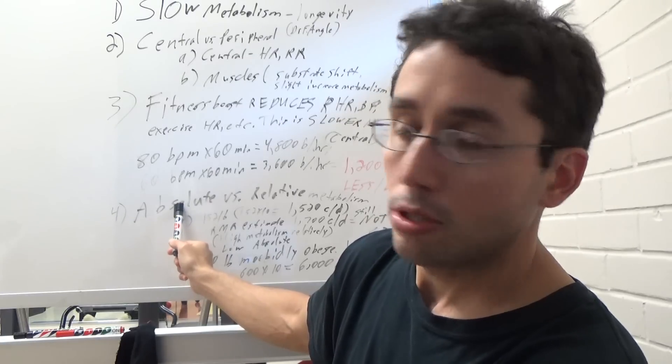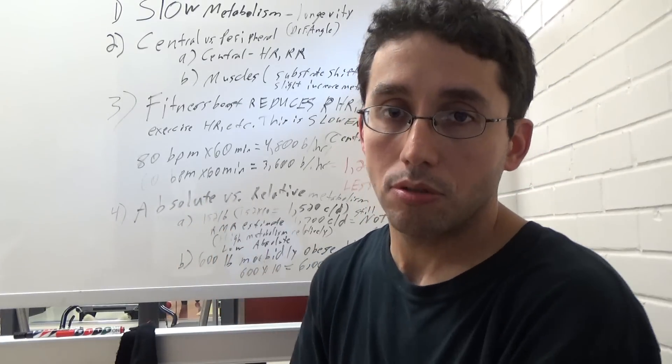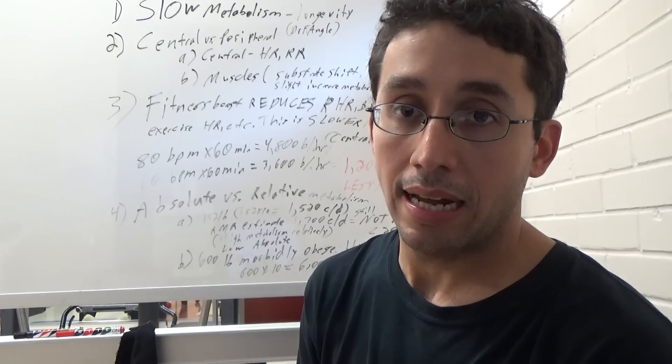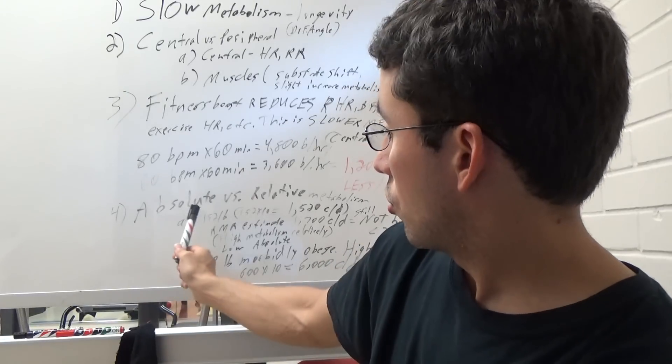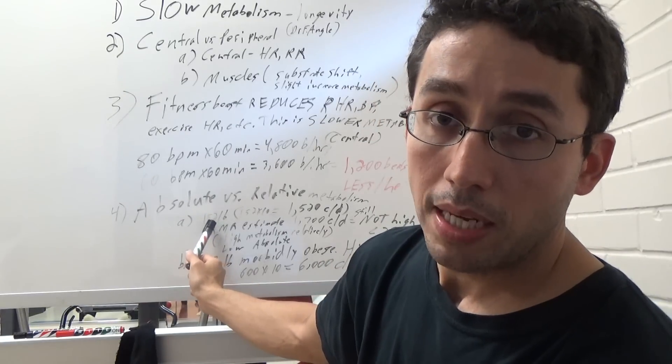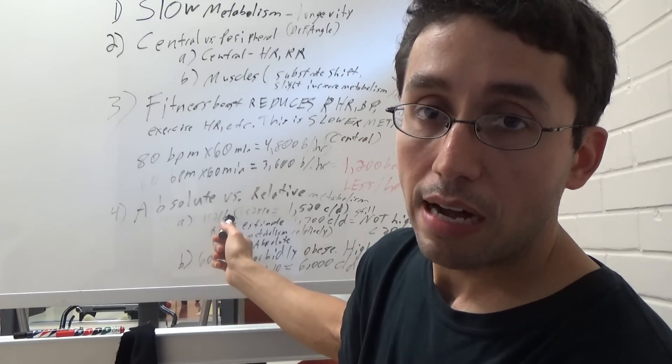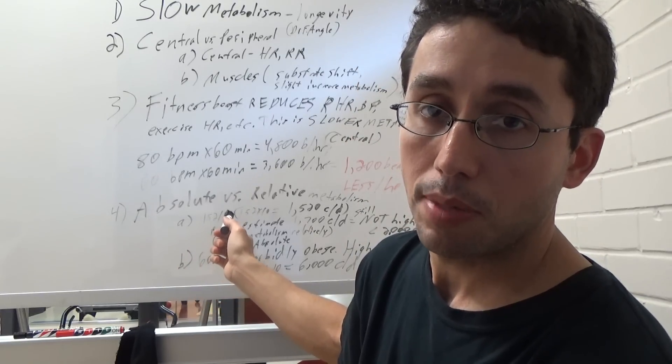The final point is absolute versus relative metabolism. Absolute, this is a perfect example. You take somebody's body weight, multiply it by 10. That's an estimate of your resting metabolism. For me, I weigh about 152 to 154 pounds. Let's say 152. That's 1,520 calories per day. That's my resting metabolic rate.